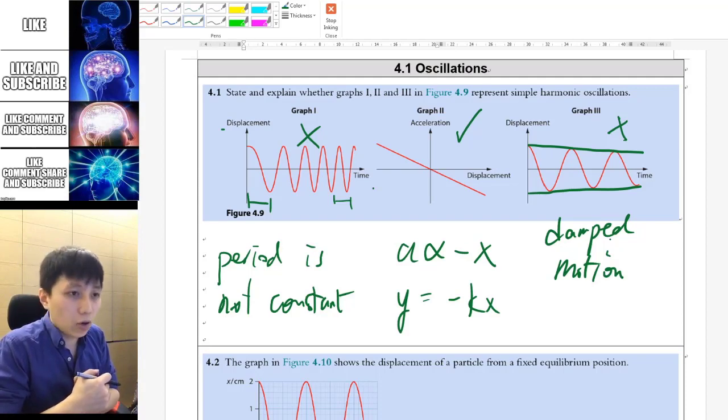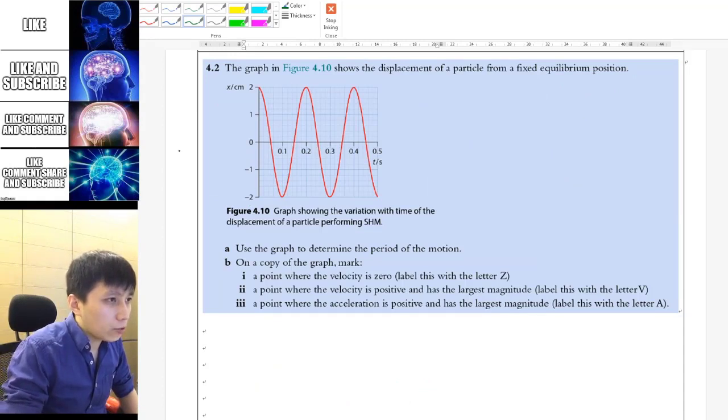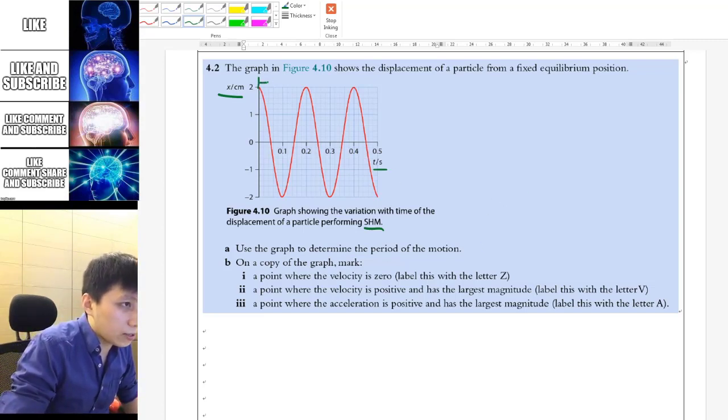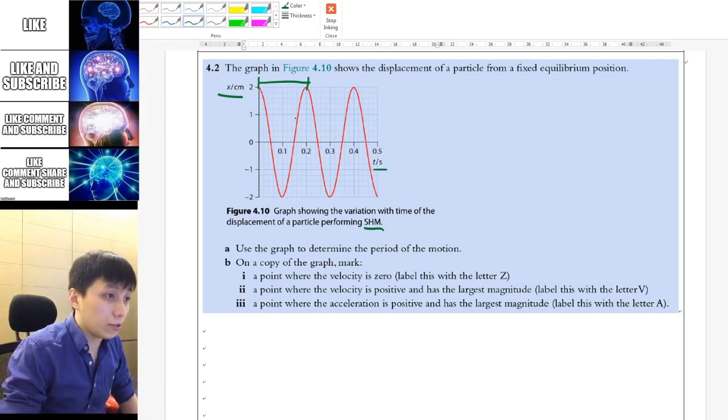Next question, you are given the displacement time graph. This is very important. It is a displacement from a fixed equilibrium position performing SHM, so you already know it's SHM. It says determine the period of the motion, so very simple stuff you should know from IGCSE as well. Just look at the same position, so I'll pick the position which is easy to see. I'll usually pick the peak, so you can see this is 0.2 seconds.